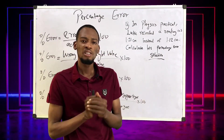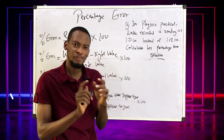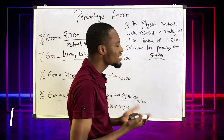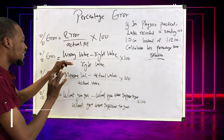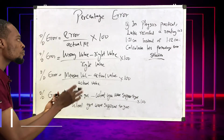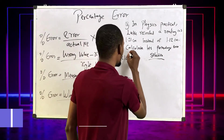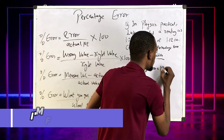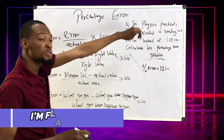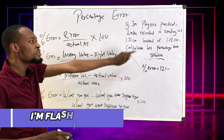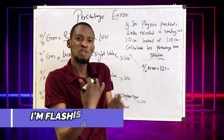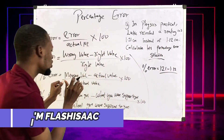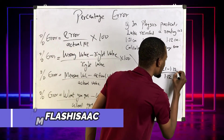When you see questions on percentage error, the first thing you check is: what is the actual value and what is the recorded value? He recorded a reading as 1.21 cm — so his reading, the measured or wrong value, is 1.21 cm. He was supposed to get 1.12 cm, so 1.12 is the actual value. Therefore, percentage error equals 1.21 minus 1.12, over 1.12, times 100.